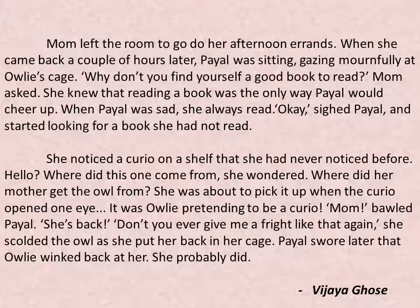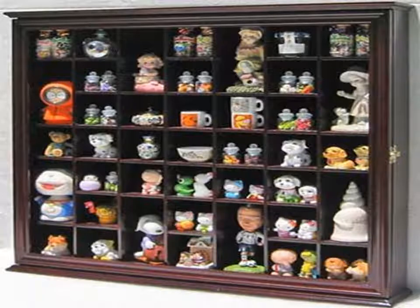Payal was very upset and was looking sadly at the cage. Mom advised Payal to read a book to cheer herself up. Payal started looking for a book to read. Suddenly she noticed a curio — a curio is an unusual or rare object. Payal realized the curio was actually Owly, who was sleeping on the shelf. She was very happy that she found Owly.